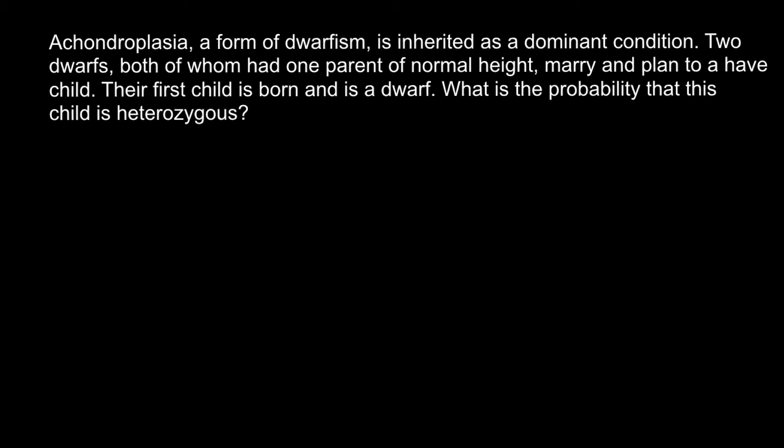Welcome to Nikolai's genetics lessons. Today's problem: Achondroplasia is a form of dwarfism inherited as a dominant condition. Two dwarves, both of whom had one parent of normal height, marry and plan to have a child. The first child is born and is a dwarf. What is the probability that this child is heterozygous?